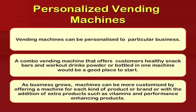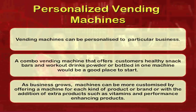Vending machines can be personalized to a particular business. A combo vending machine offering healthy snack bars and workout drink powders bottled in one machine could be a good place to start. As business grows, machines can be more customized by offering a machine for each kind of product or brand, with the addition of extra products such as vitamins and performance-enhancing products. Customization can increase revenues.